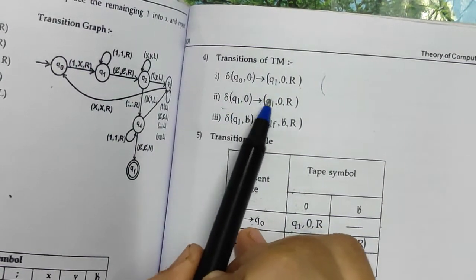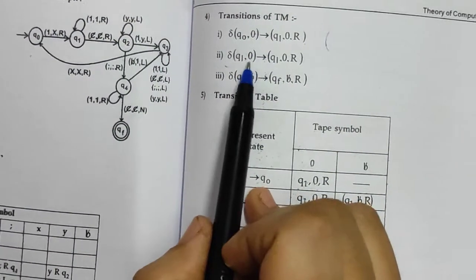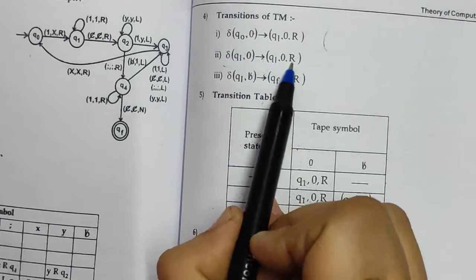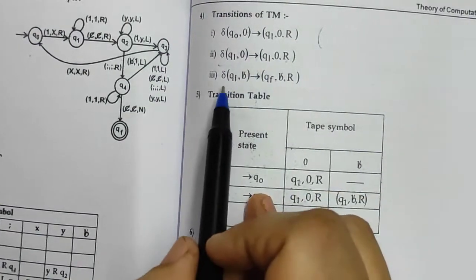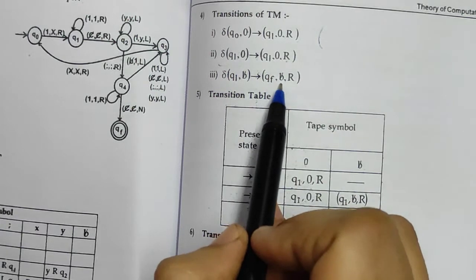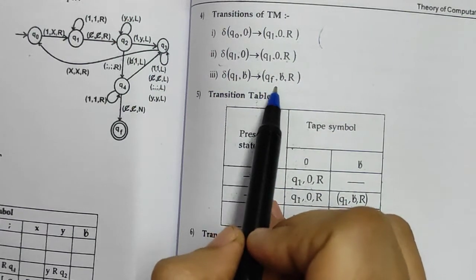For q1 with 0 input, we will remain in state q1, 0 will remain as it is, and we will move in the right direction. For q1 with blank input, we will go to the final state qf. The blank will remain as it is and we will move in the right direction.